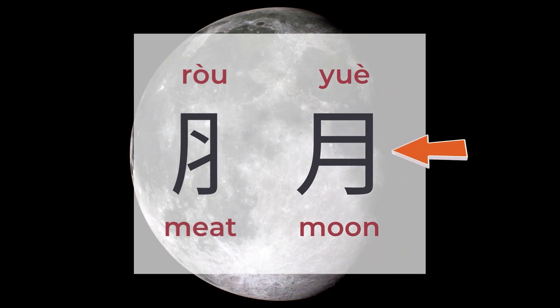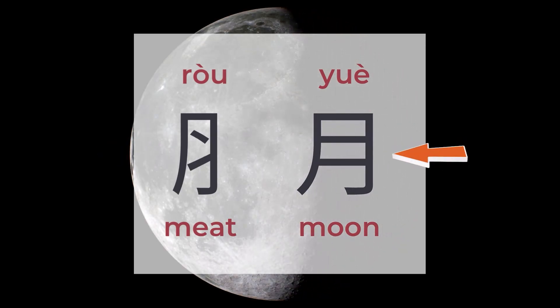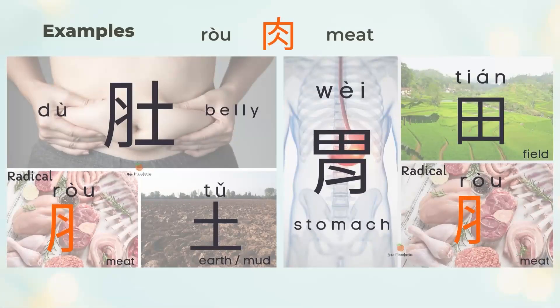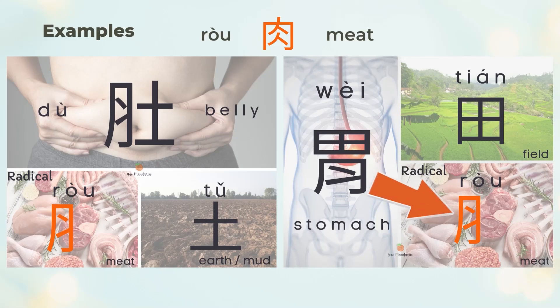月 means moon and is also a pictogram, and 月 is also a Chinese radical. 肚 means belly. 肚 is the left 肉 (meat) and the right 土 (earth). 胃 means stomach. 胃 is the top 田 (fields) and the bottom 肉 (meat).